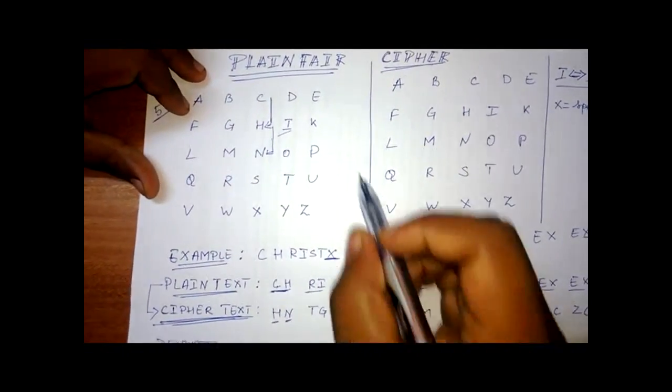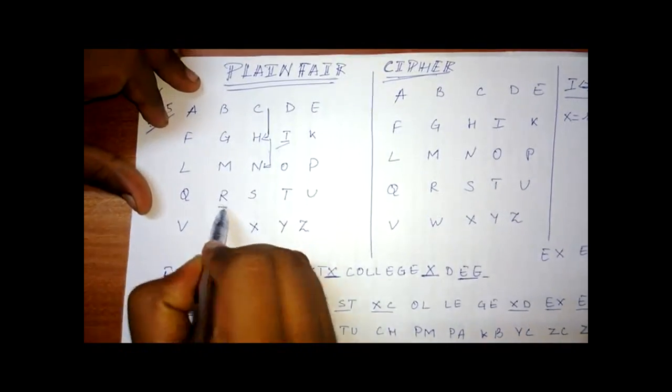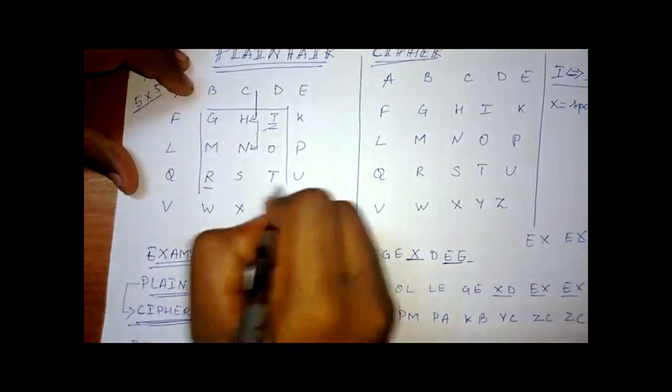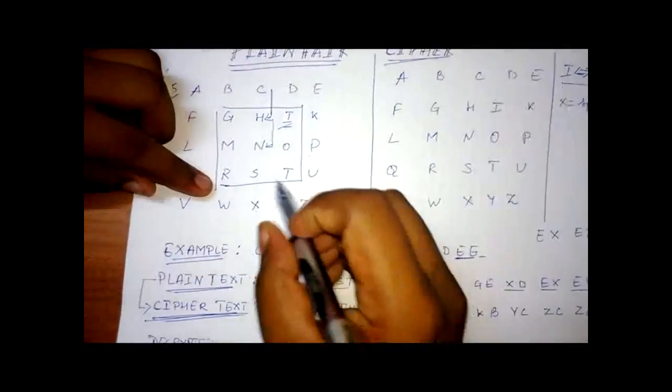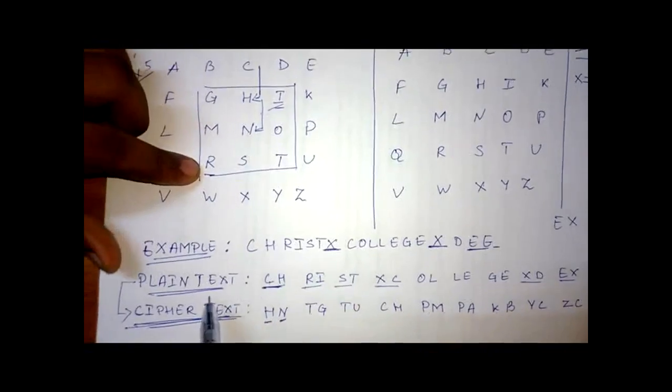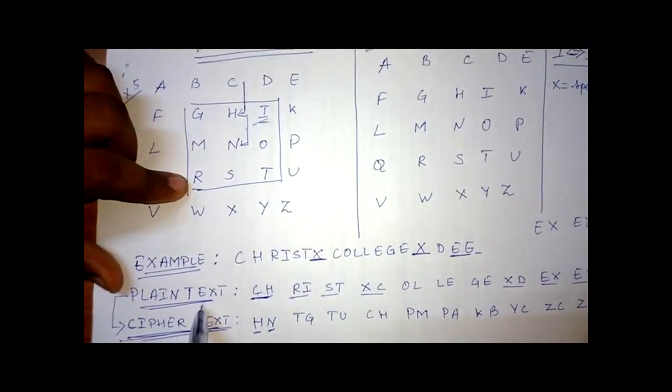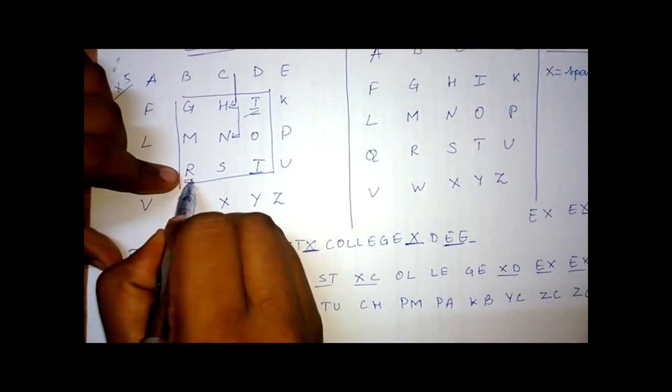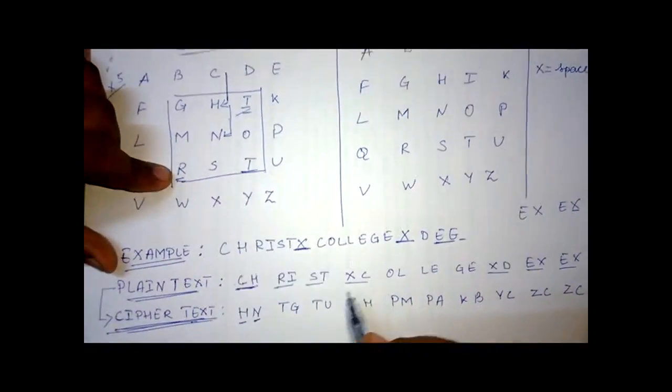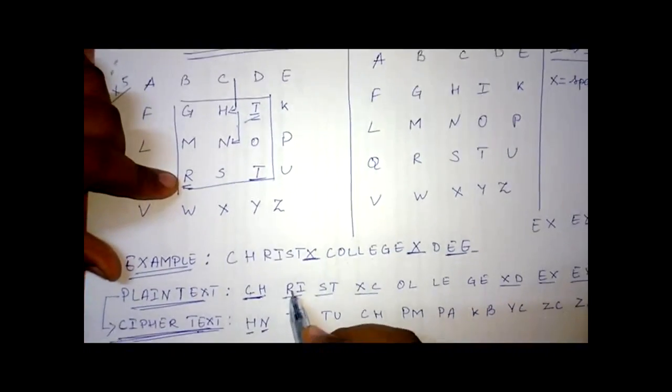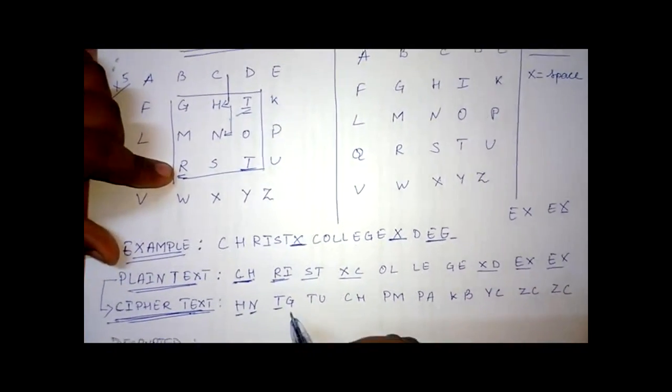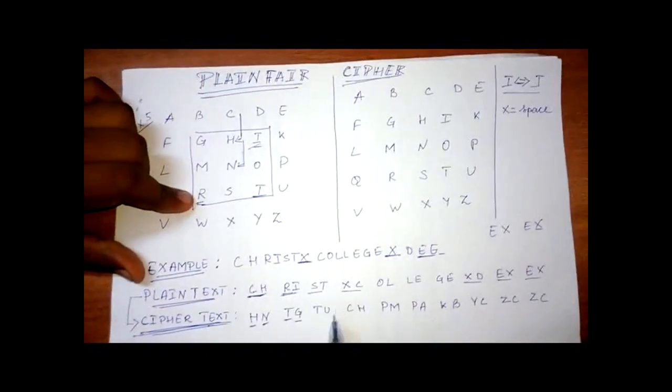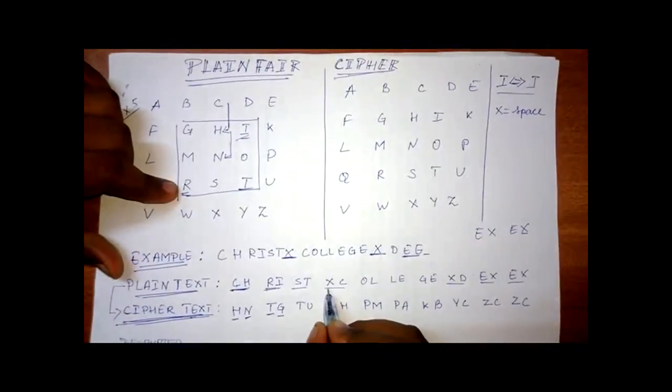Okay. Next example for the next plain text. We have RI. So we have R and we have I. So this forms a matrix of three into three. So when taking the plain text to the code, we'll take the last word from the matrix. So T will take the place for R. Same way, R will take the place for T. And similarly for I, G. For I, G. Same way for all the words.